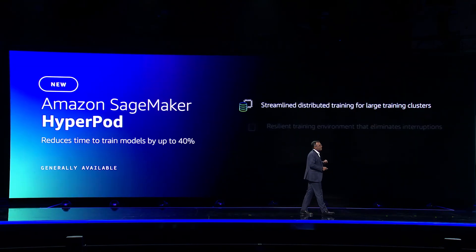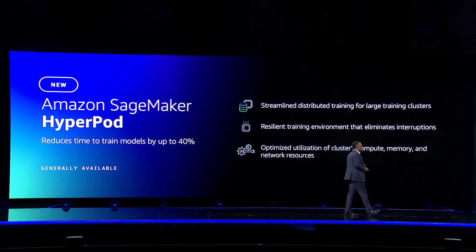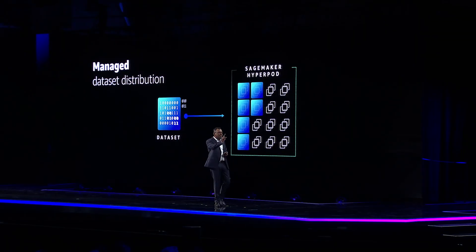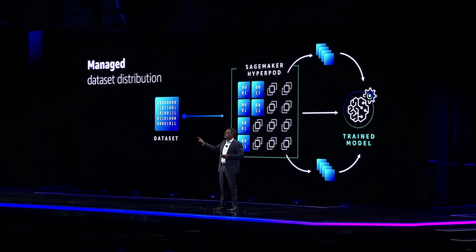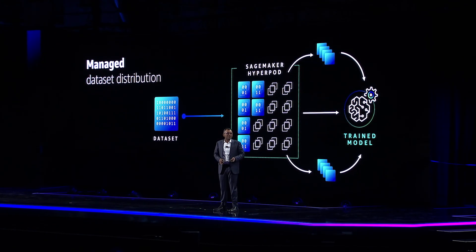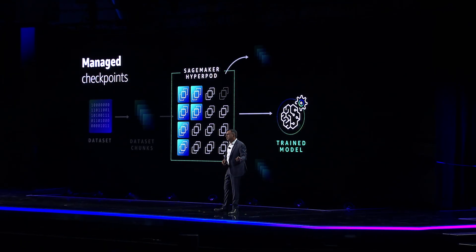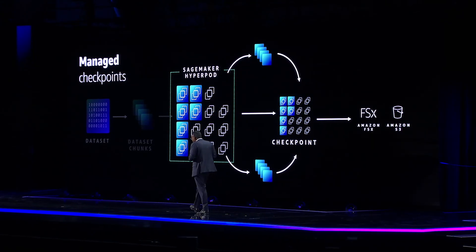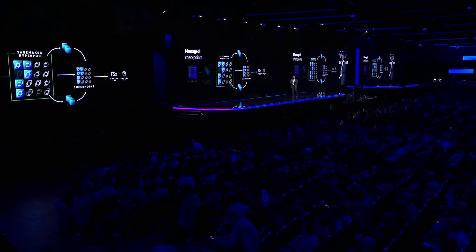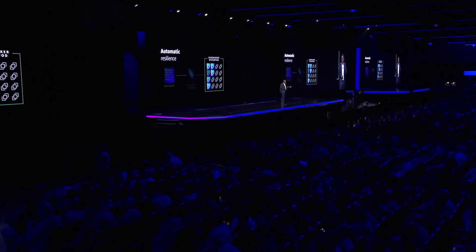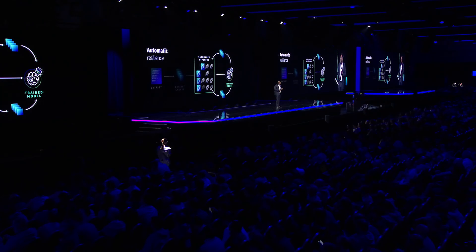HyperPod is pre-configured with SageMaker's distributed training libraries. This enables your data and models to efficiently distribute across thousands of chips in the cluster and process them in parallel. HyperPod also helps customers iteratively pause, inspect, and optimize these models because it automatically takes checkpoints frequently. And if a hardware failure occurs, it detects the failure, replaces the faulty instance, and resumes training from the last checkpoint.